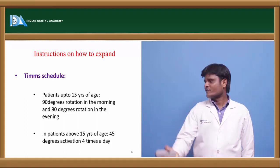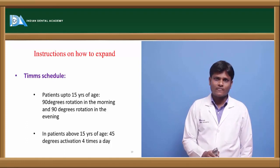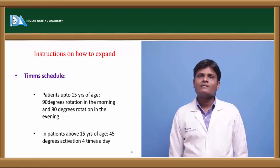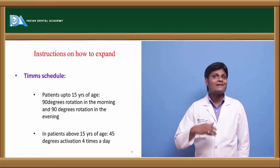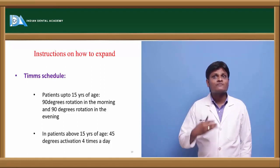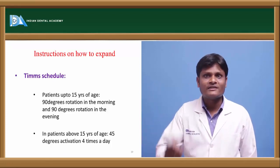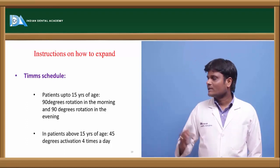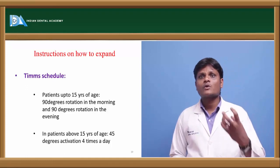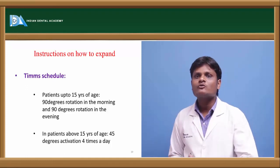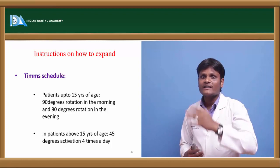In patients above 15 years of age, 45 degrees activation four times a day is required. In a younger individual the sutures yield easily, whereas in elderly patients the sutures do not yield as easily, so stress concentration causes more discomfort. That is why in younger patients we can activate as much as 90 degrees morning and evening, whereas in adult patients — where sutures are more ossified — we must go for 45 degrees four times a day.